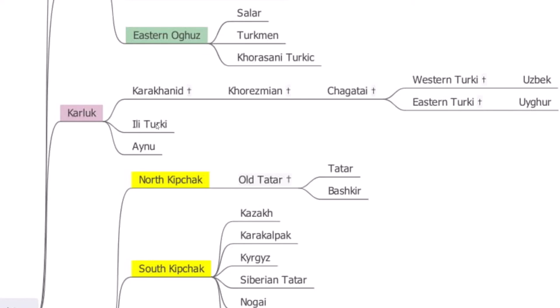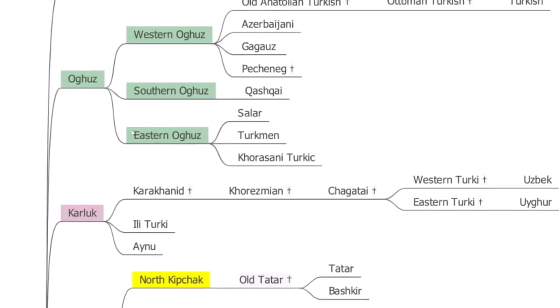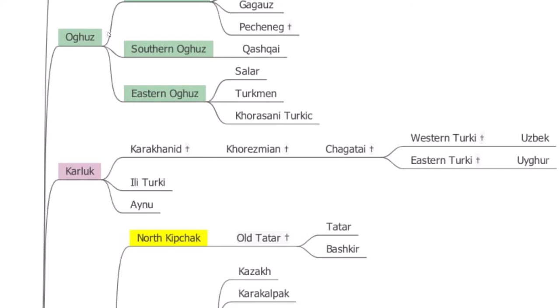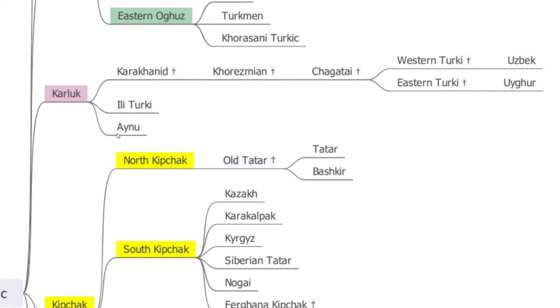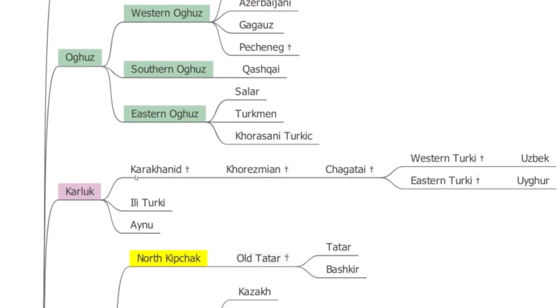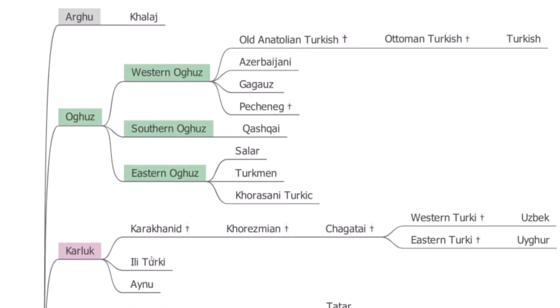I didn't include Tembé by Karakhanate because it's similar to Khalaj — it's like a mixed language with Persian. It is also claimed that the Yaghnobis are descendants of the Hephthalites as well.